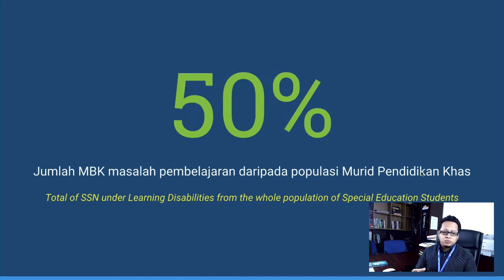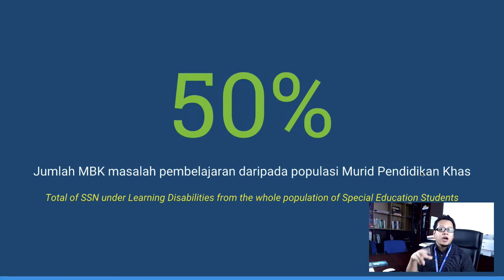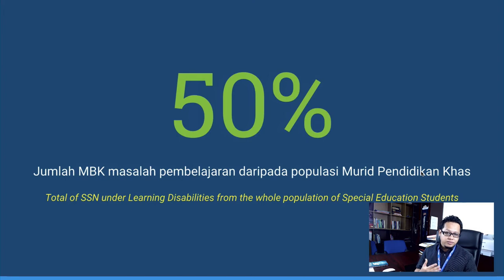If we compare this with learning disability, students with special needs who have learning disabilities have a higher percentage within the population of students with special needs. So you have a higher chance of bumping into students with learning disability rather than bumping into students with a low incidence disability.